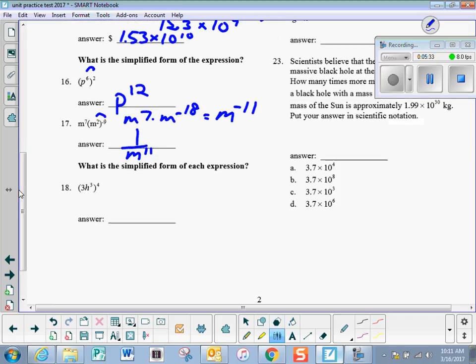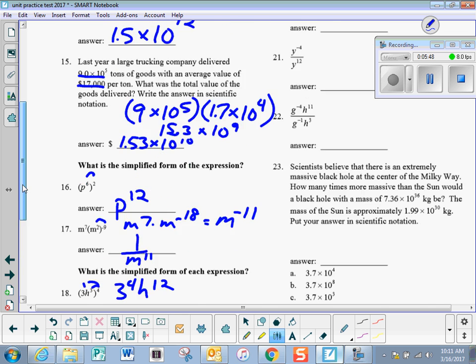Number 18, distribute the power. Don't forget that it's 4 times 1 and 4 times 3, so it would be 3 to the 4th, h to the 12th, which is going to be 81 h to the 12th.